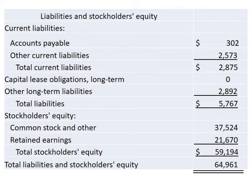The balance sheet continues with liabilities and stockholders' equity. Remember this is a continuation of the balance sheet, not a separate statement. The first section is liabilities, starting with current liabilities — those debts that are due within a year or operating cycle. Liabilities are also arranged from most liquid, or soonest due, to least liquid. Accounts payable is the first current liability, followed by other current liabilities. Then the long-term liabilities are each listed. Total liabilities are calculated by adding total current liabilities and each of the long-term liabilities.